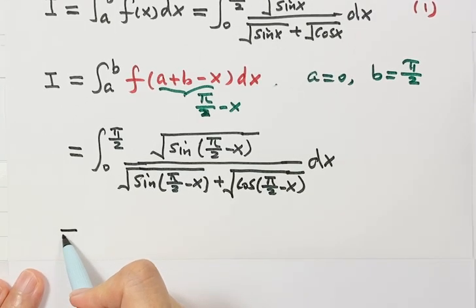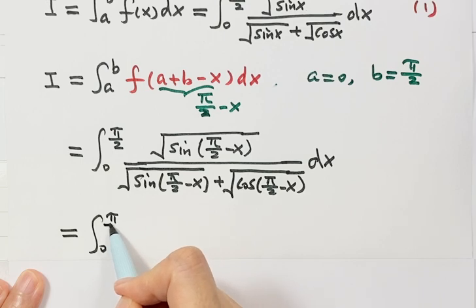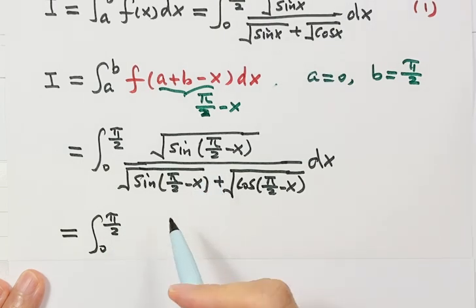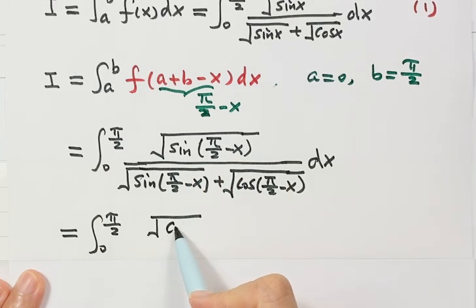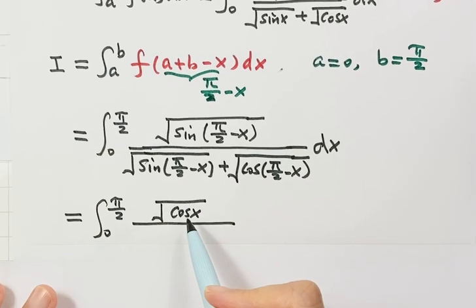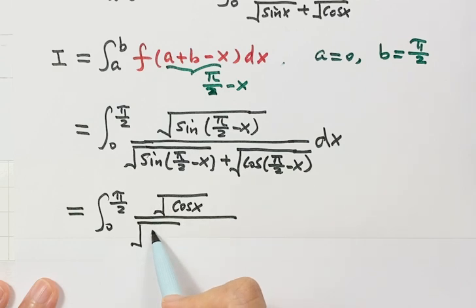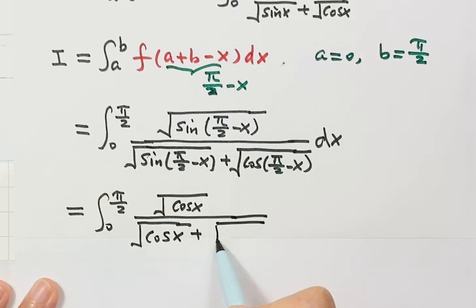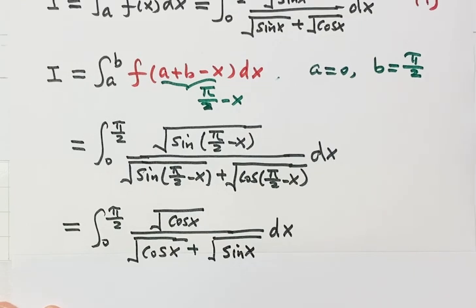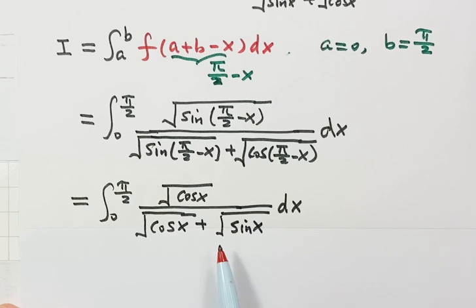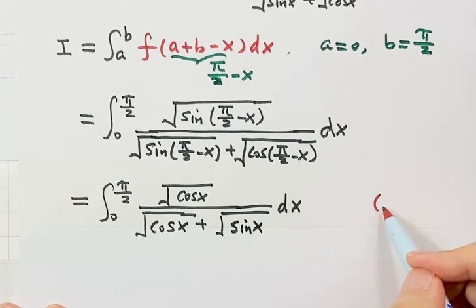Now we simplify using trig identities. Since sin(π/2 − x) = cos x and cos(π/2 − x) = sin x, the integral becomes the integral from zero to π/2 of cos x divided by (cos x + sin x) dx. We label this as Result 2.